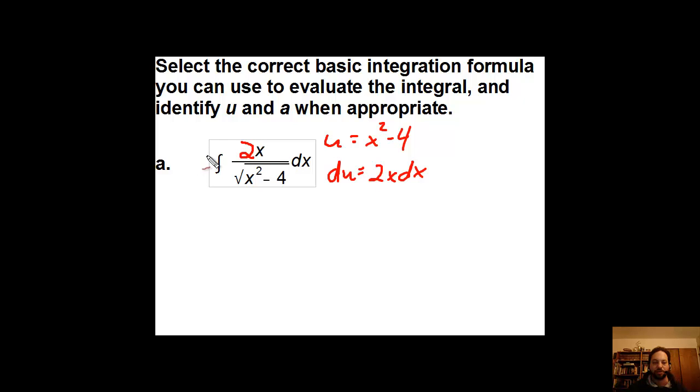If that's the case, you can see how u will fit here with 2x dx. We can force that to happen if we multiply by 2 and balance it with one half on the outside, allowing us to have the integral one half u to the negative one half du.